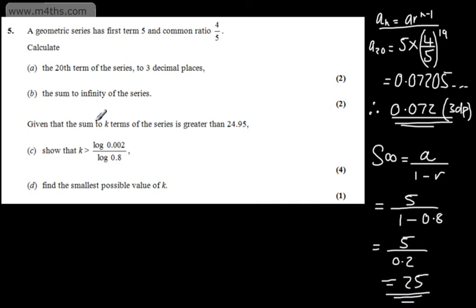It says, given that the sum to k terms of the series is greater than 24.95, in part c we need to show that k is greater than log of 0.002 over log of 0.8.